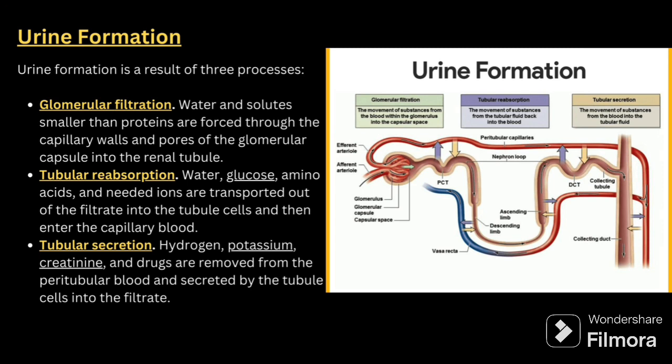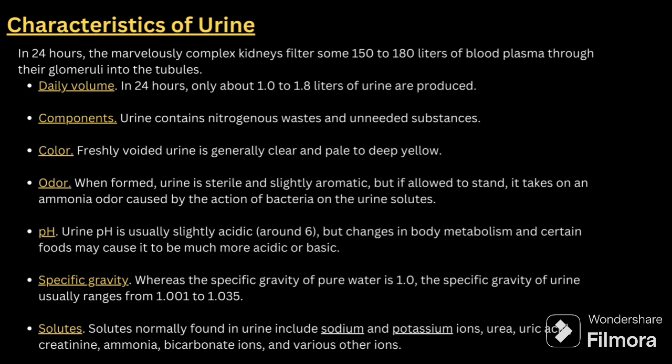Now we look at physiology — urine formation — which is the result of three processes: glomerular filtration, tubular reabsorption, and tubular secretion. In glomerular filtration, water and solutes smaller than proteins are forced through the capillary wall and pores of the glomerular capsule into the renal tubule. In tubular reabsorption, water, glucose, amino acids, and needed ions are transported out of the filtrate into the tubule cells and then into capillary blood. In tubular secretion, hydrogen, potassium, creatinine, and drugs are removed from peritubular blood and secreted into the filtrate.